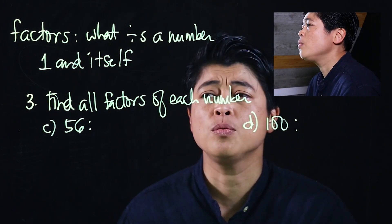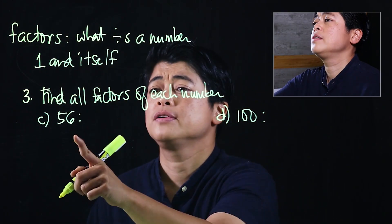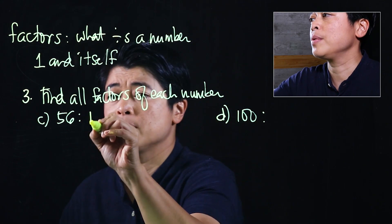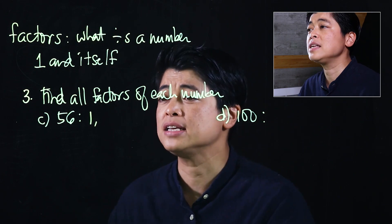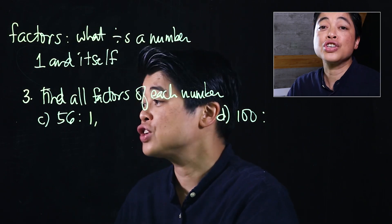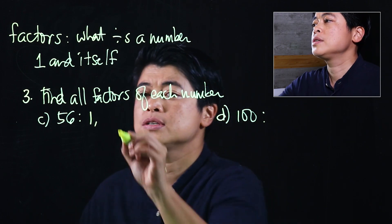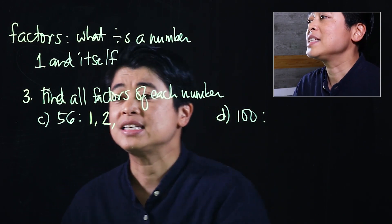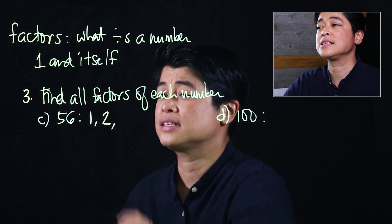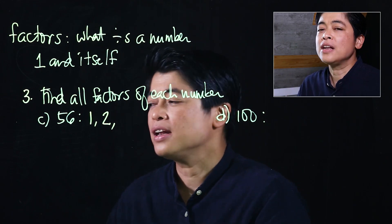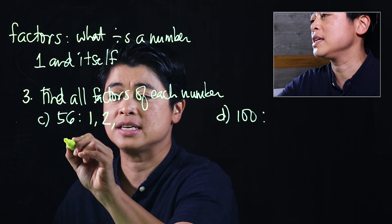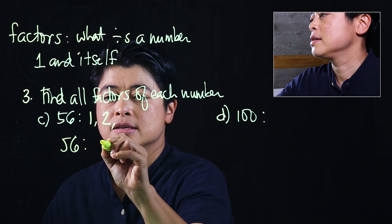To find all factors of 56, the easiest thing is to start with 1. If your kids can do it mentally, check if it's even — that's for the 2. Since 56 is even, 2 is a factor. If the numbers are big, another strategy is to just start listing.